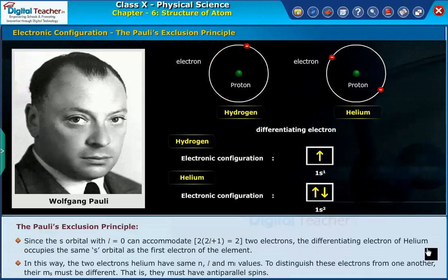To distinguish these electrons from one another, their mₛ must be different. That is, they must have anti-parallel spins.